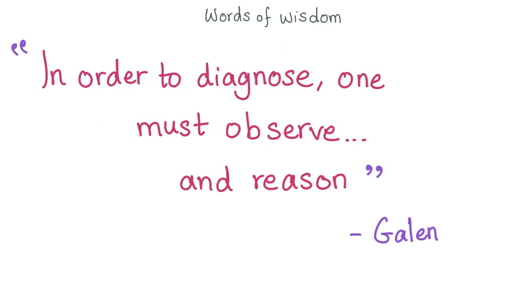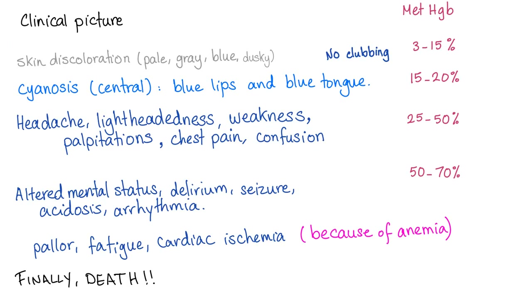Galen, the Roman physician, once said: in order to diagnose, one must observe and reason. So clinically speaking in methemoglobinemia, you have skin discoloration — pale, gray, blue, or dusky. Do you have clubbing? No. Do you have cyanosis? Yes.